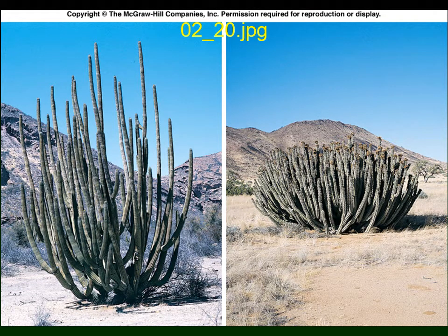Because deserts are such a harsh environment, the things that live in them tend to adopt the same strategies. This is illustrated by two different plants from two different deserts: on the left, a cactus in North America, and on the right, a euphorbia in Africa. They look like very similar types of plants but are actually unrelated — they've evolved the same traits on different continents.